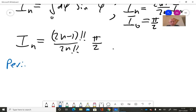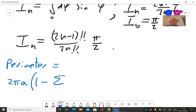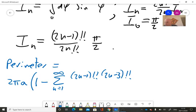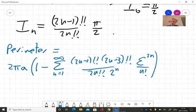The perimeter of an ellipse is 2 pi a times 1 minus sum from n equals 1 to infinity. And now I should put all the terms together. And let's see what we get. We get 2n minus 1 double factorial times 2n minus 3 double factorial over 2n double factorial squared times epsilon to the 2n over n factorial. That's the perimeter of an ellipse.